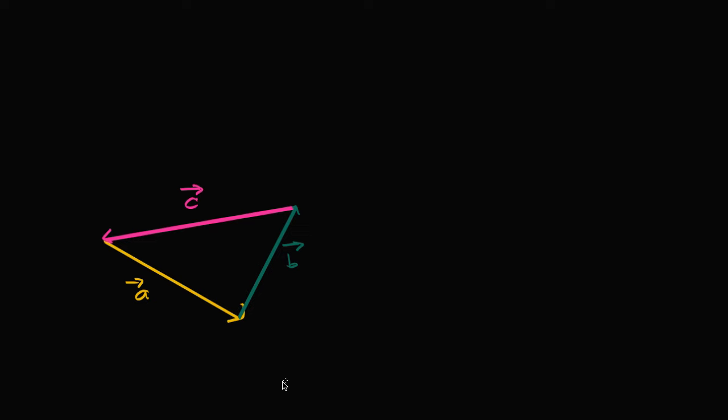So I encourage you to pause the video and see if you can write an equation that defines this relationship. Well this is interesting because they're all going in a circle right over here. You could start at this initial point. You said okay, A plus B. Well A, if you're trying to figure out what A plus B is going to be, the resulting vector would start here and end here. But vector C is going in the opposite direction.